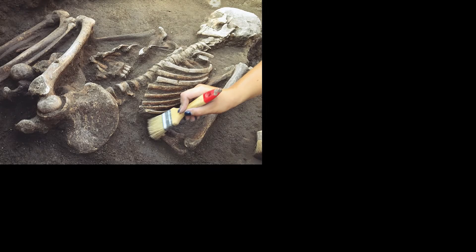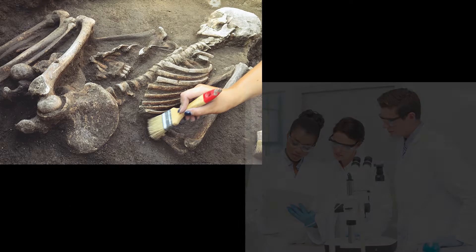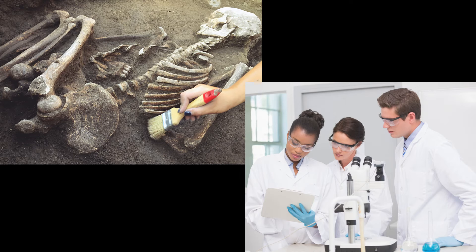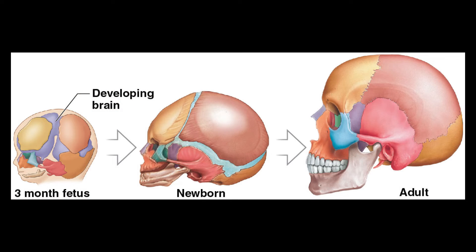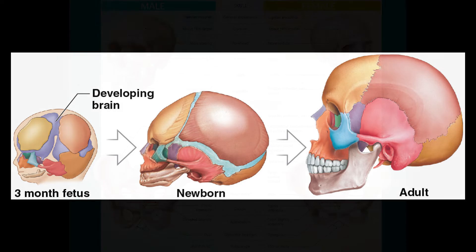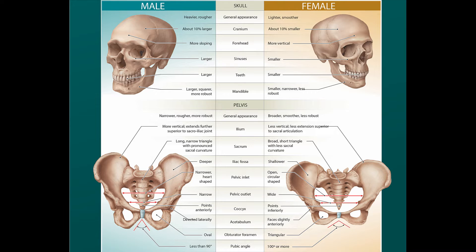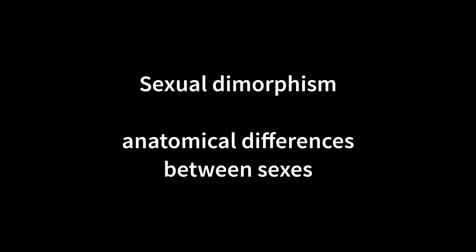Have you ever wondered how anthropologists and pathologists can determine sex from skeletal remains? Although it's difficult and nearly impossible to determine the sex of infant or juvenile remains, adult male and female skeletons can differ greatly in both size and shape. These hormonally influenced variations in appearance result in predictable patterns between the sexes, a concept termed sexual dimorphism.